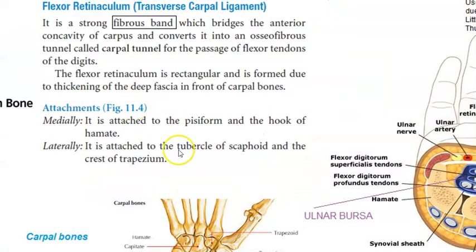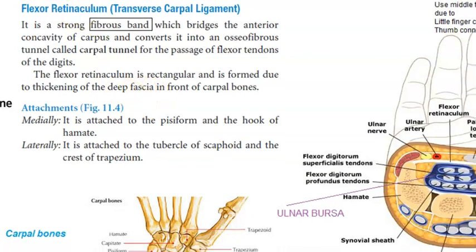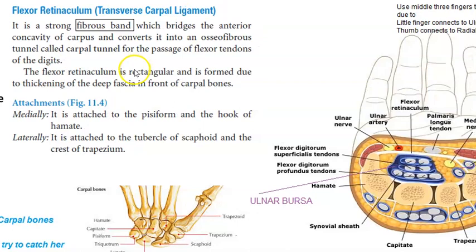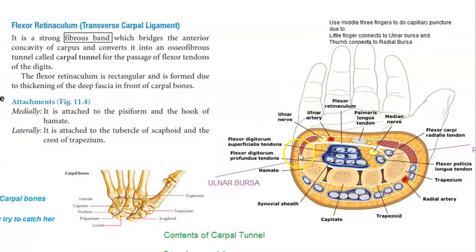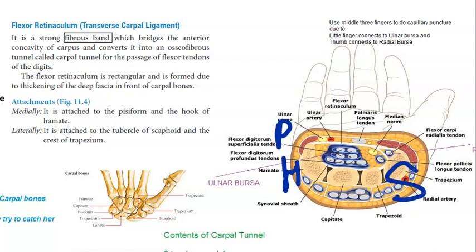If they ask for more marks, explain how the flexor retinaculum is attached. It is a fibrous band. Medially it is attached to the pisiform and hook of hamate. Laterally it is attached to the scaphoid and the crest of the trapezium — specifically the tubercle of scaphoid and crest of trapezium.